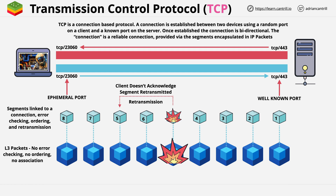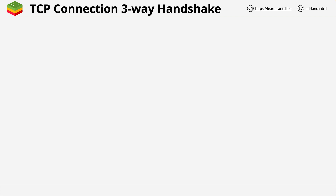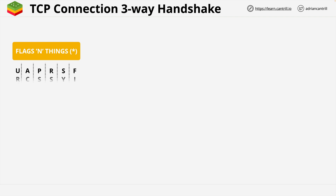When you hear the term ephemeral ports or high ports, this means the port range that the client picks as the source port. Often you will need to add firewall rules allowing all of this range back to the client. Now, when I was stepping through TCP segment structure, I mentioned the flags field. This field contains, as the name suggests, some actual flags — these are things which can be set to influence the connection.